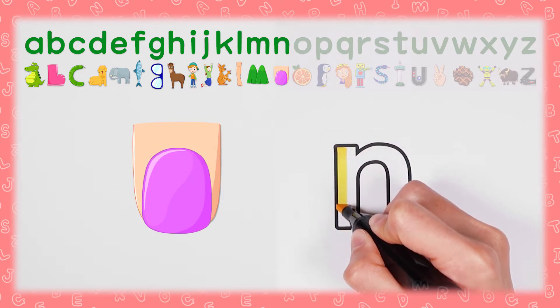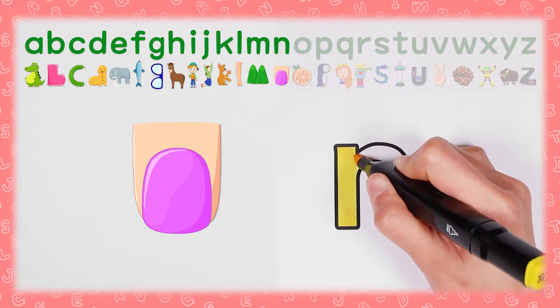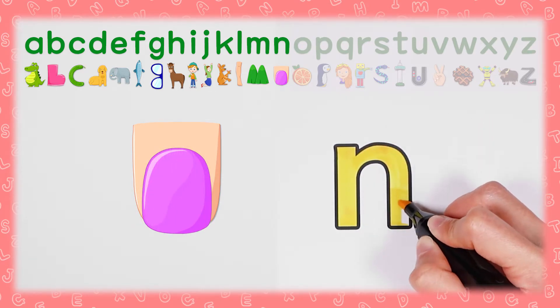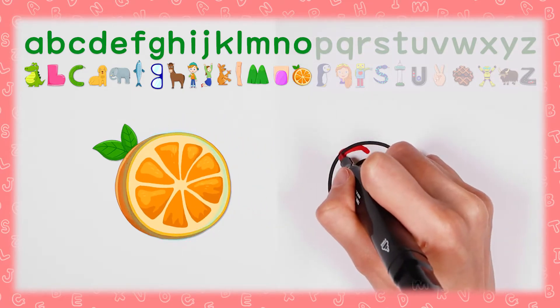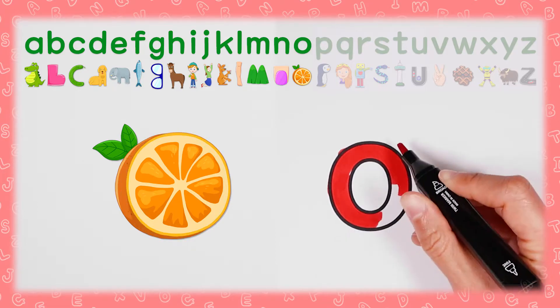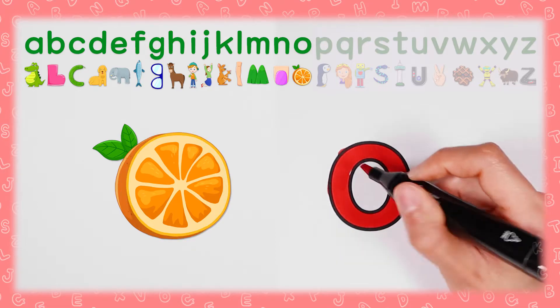N, 둥근 N (round N). O, 동그란 오렌지 O O (round orange)